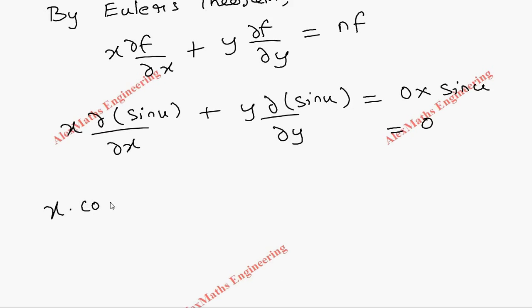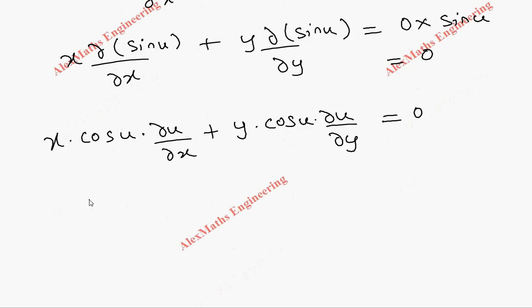So x into cos u, by chain rule differentiation of u is del u by del x. In the same way, y into cos u into differentiation of u with respect to y is del u by del y equal to 0. Let's divide each term by cos u.